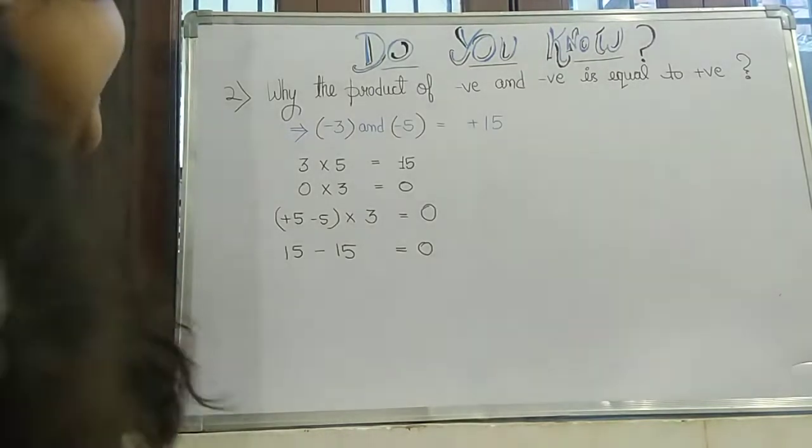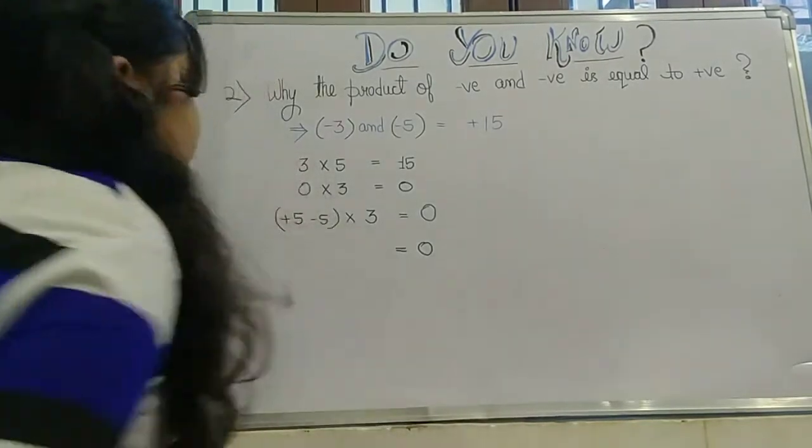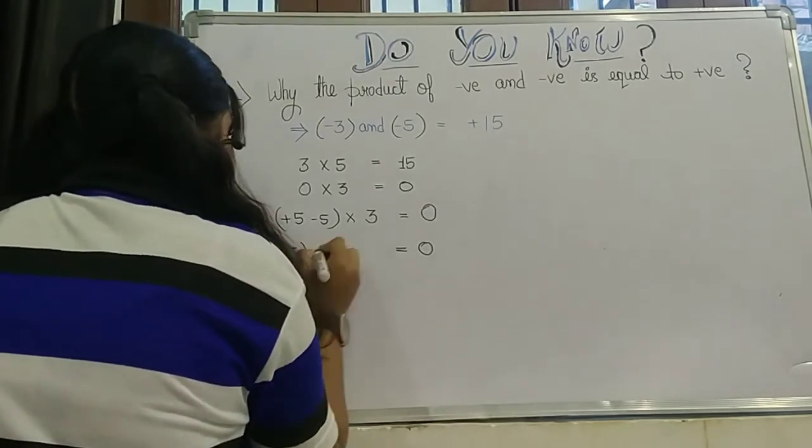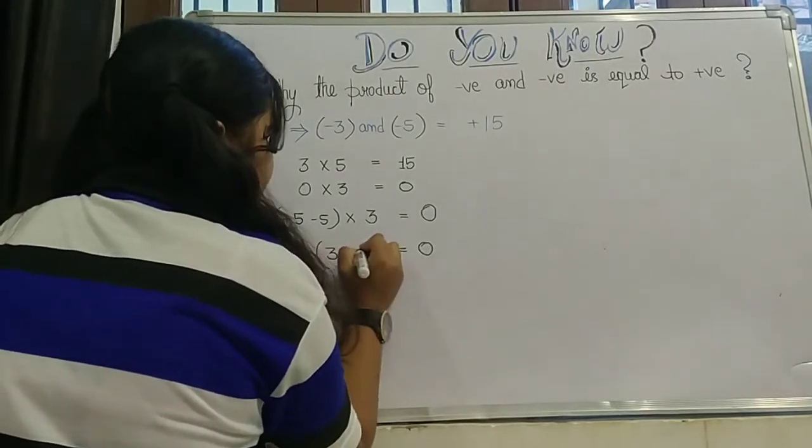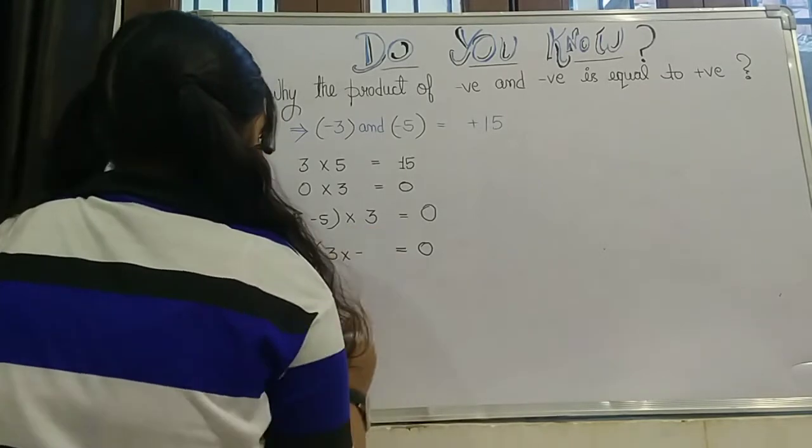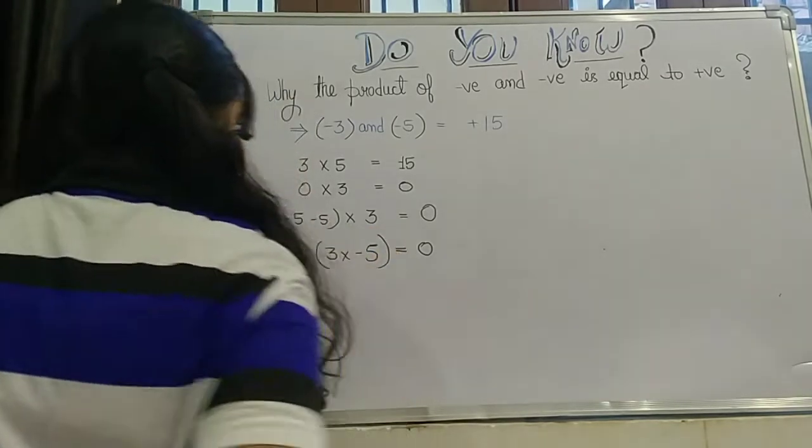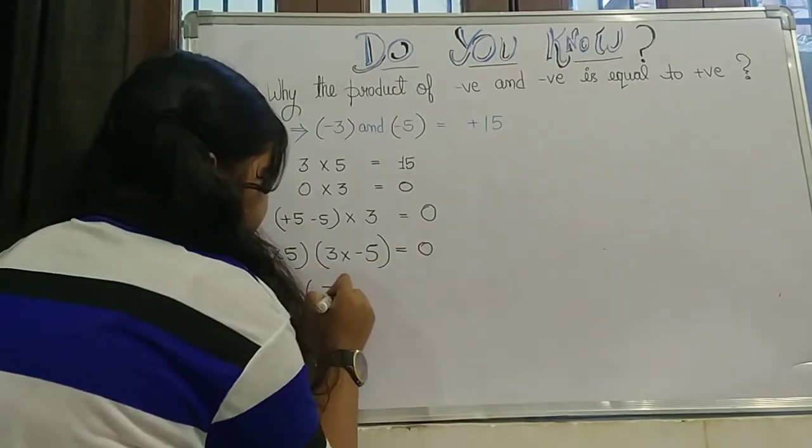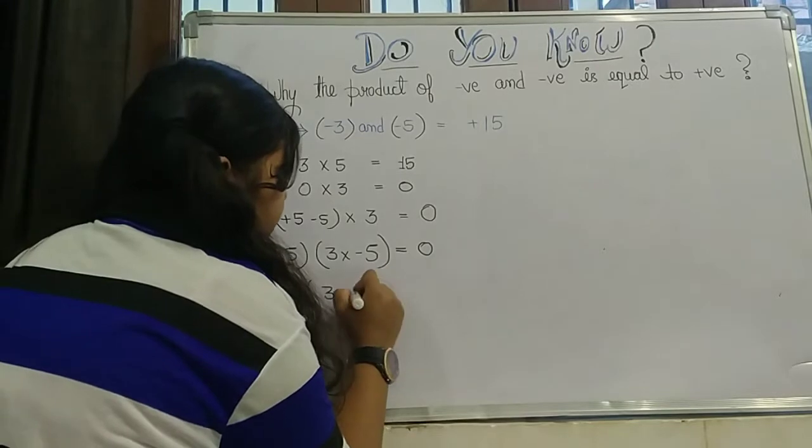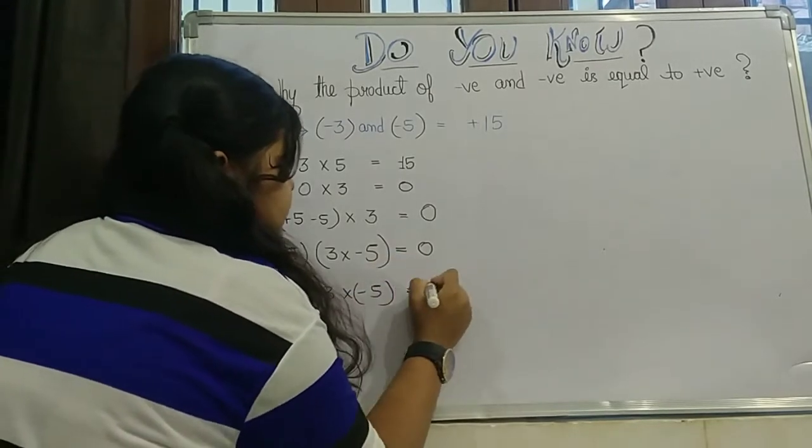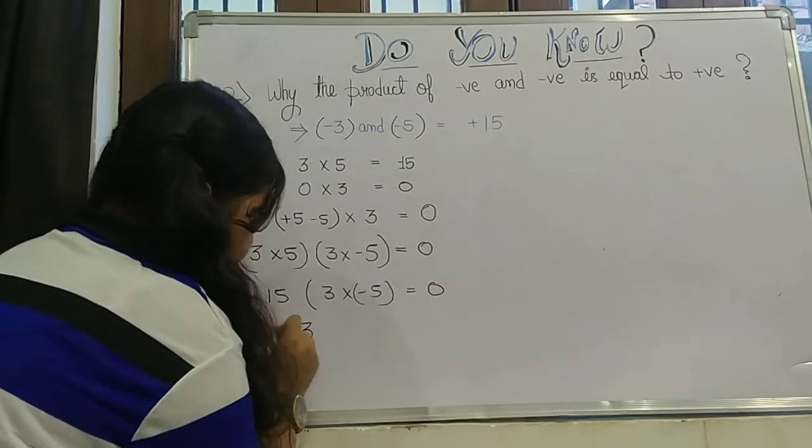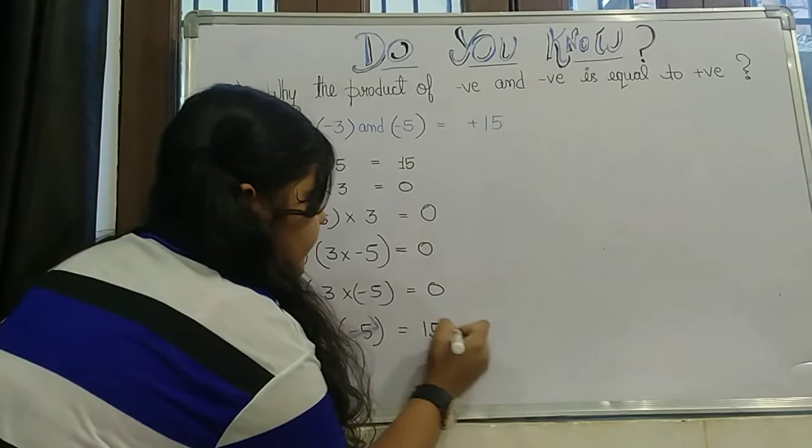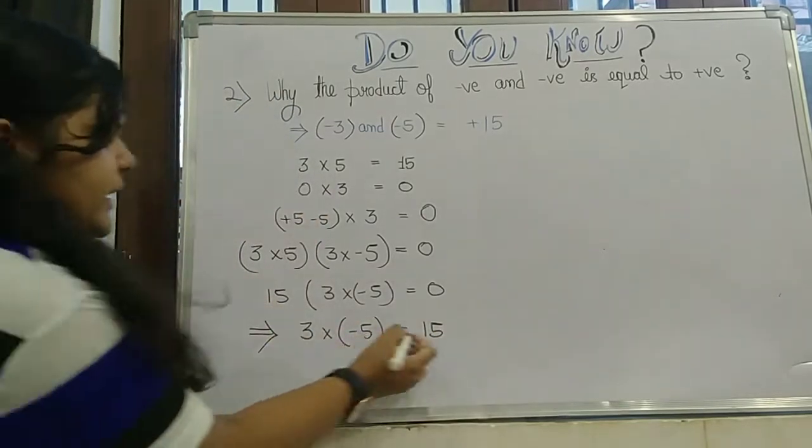So here we got the concept that 3 into minus 5 is equal to 15. So here we got the conclusion that 3 into minus 5 is equal to positive 15... when this 15... sorry, negative 15.